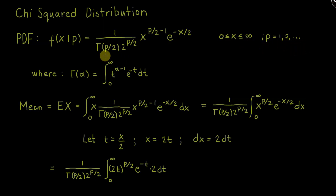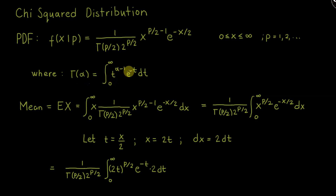Now, this big gamma here is the gamma function, defined to be Γ(α) equal to the integral from 0 to infinity of t^(α − 1) · e^(−t) dt.